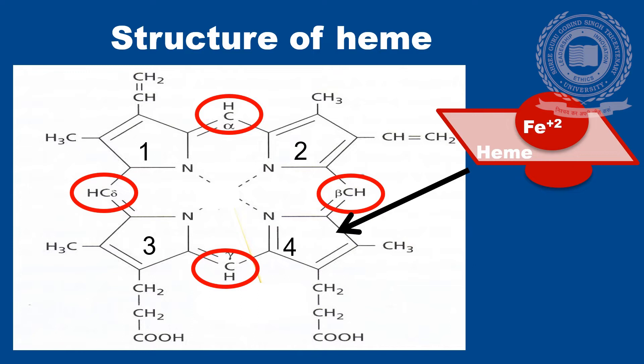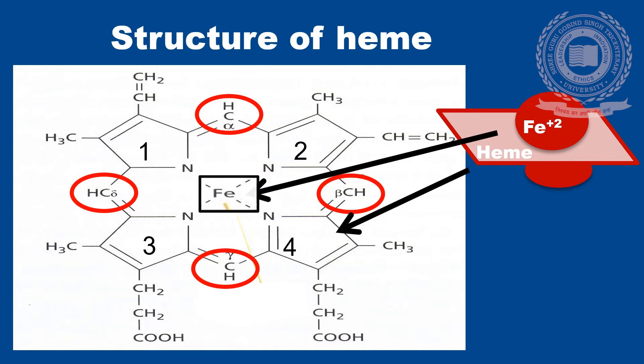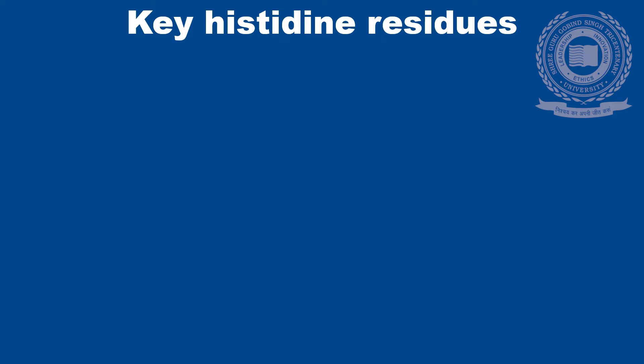In the center there is iron in the ferrous form which conjugates with the protoporphyrin ring. Ferrous iron binds to globin. There are certain histidine residues around the heme molecule which are of importance: first is the proximal histidine or the F8 molecule, and then is the distal histidine or the E7 molecule.